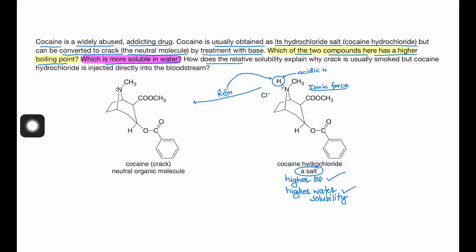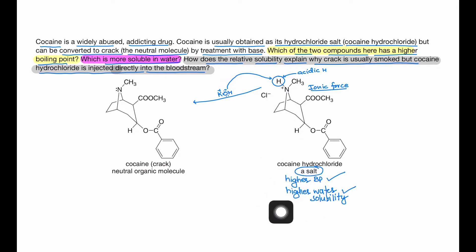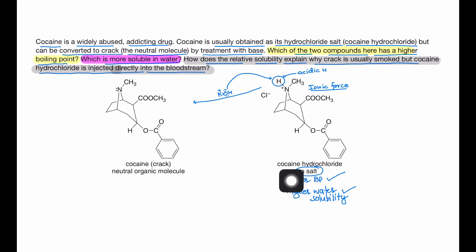How does relative solubility explain why crack is usually smoked but cocaine hydrochloride is injected directly into the bloodstream? Since cocaine hydrochloride is ionic, it forms better hydrogen bond interactions with water and is more water soluble. Due to this high water solubility, cocaine hydrochloride can be injected directly into the bloodstream where it can dissolve.